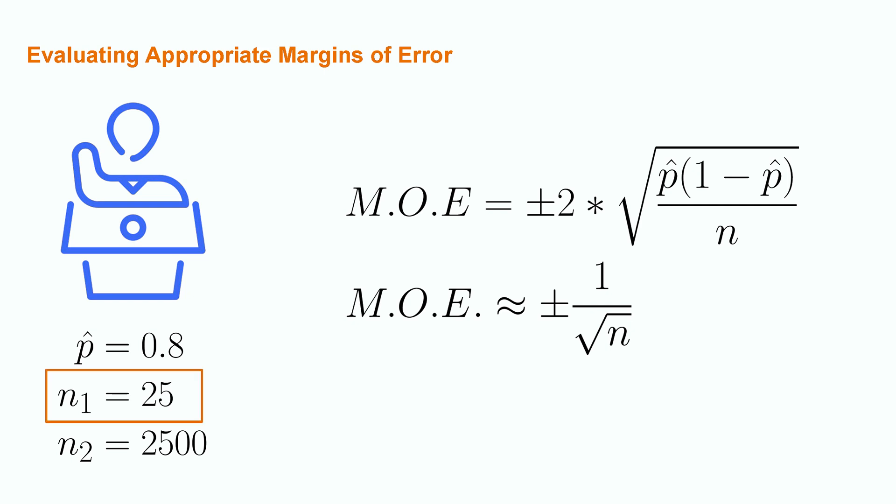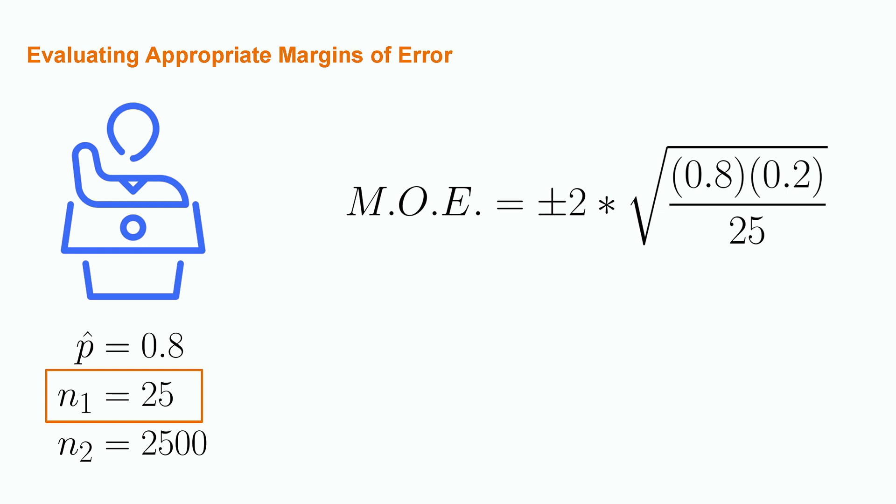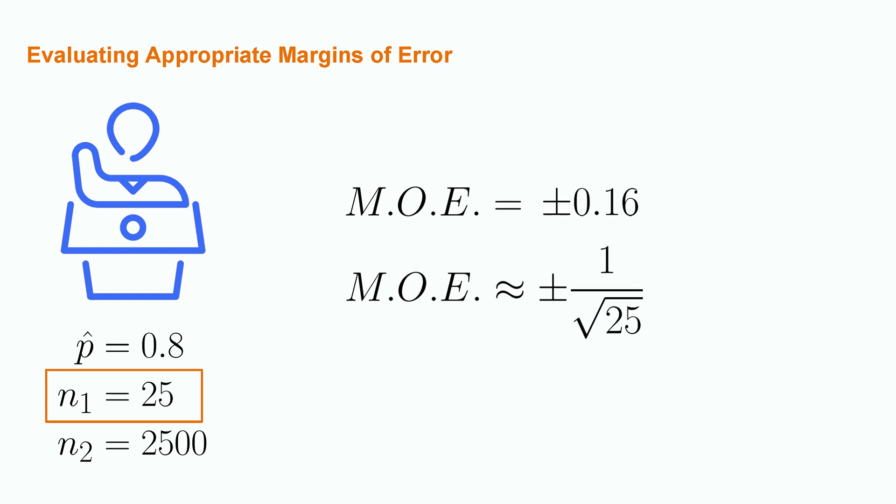Let's work out the margin of error for the small sample size first. The margin of error will be plus or minus 2 times the square root of 0.8 times 0.2 divided by 25. Plugging this into a calculator, the margin of error will be equal to plus or minus 0.16. With the approximation, we only need to take 1 over the square root of the sample size of 25, which yields plus or minus 0.2. So these calculations differ by 4% in each direction.